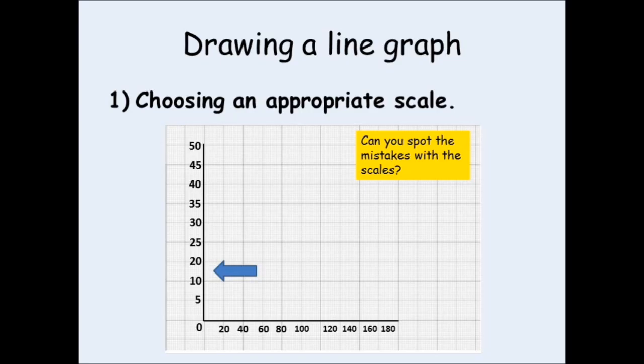Now, each square needs to be worth the same amount. This little mistake would cost you your mark for the y-axis. The second mistake is on the x-axis. Now, the numbers are going up by 20 each time. However, going from 100 to 120, the number has not been drawn in the correct place.